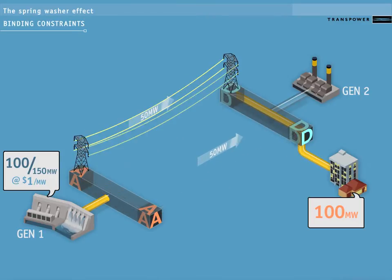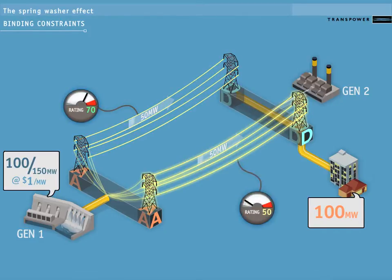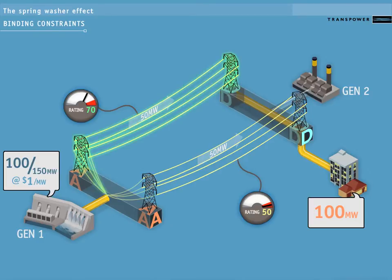Although they have the same impedance, our two transmission lines do not have the same rating. This line has a rating of 70 megawatts, and this line has a rating of only 50. In this case, it has a lower rating because it has less clearance below it. There are many reasons for lines to have different ratings. The higher rating means this transmission line can carry more power than the line with the lower rating.